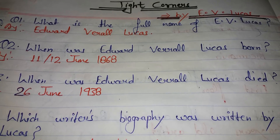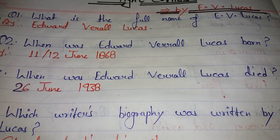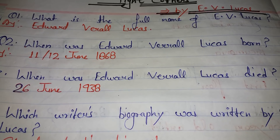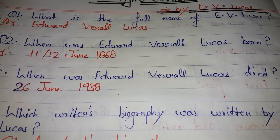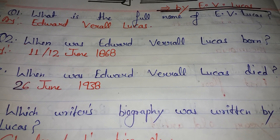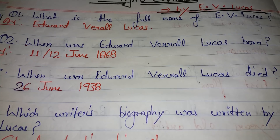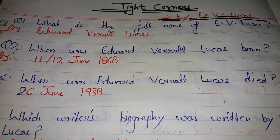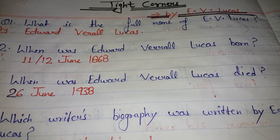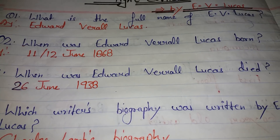There is some confusion on the date of his birth — it may be 11 or 12. That's why it is mentioned as 11/12 June everywhere. No one is completely clear about his exact birth date. So it is June 1868.